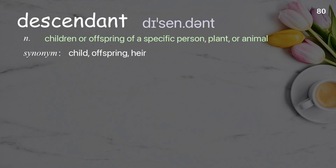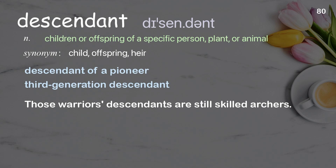Descendant: children or offspring of a specific person, plant, or animal. Examples: descendant of a pioneer, third generation descendant. Those warriors' descendants are still skilled archers.